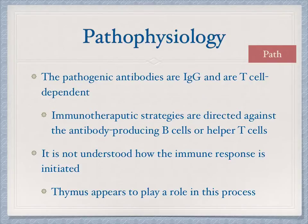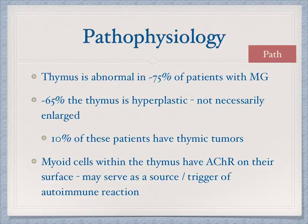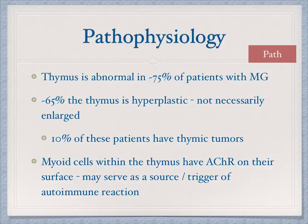It's not fully understood what initiates the autoimmune reaction, but the thymus is thought to play a role. The thymus is abnormal in about 75% of patients with myasthenia gravis — 65% show hyperplastic thymus (not necessarily enlarged), and 10% have tumors. The myoid cells of the thymus have acetylcholine receptors on their surface, which may serve as a trigger for the autoimmune reaction.